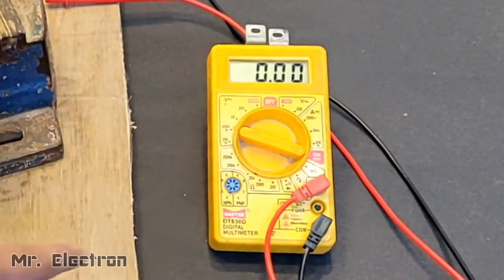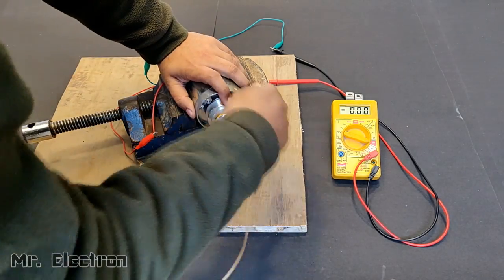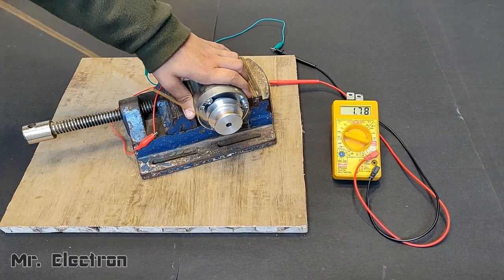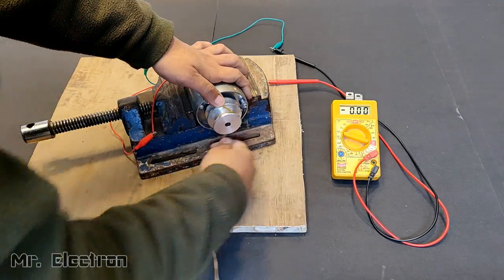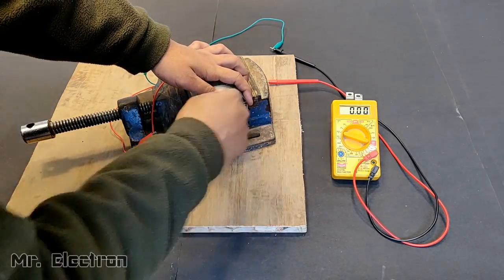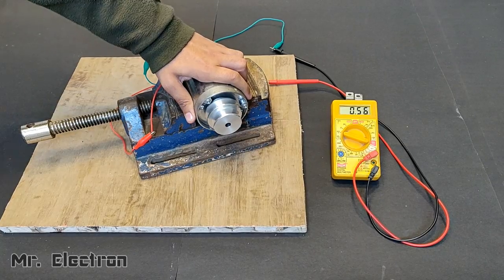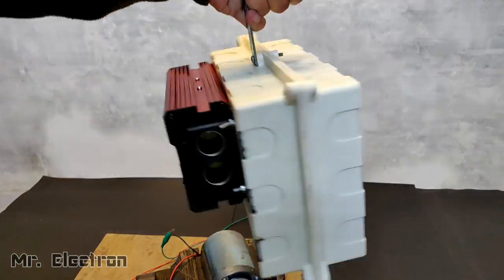Let's measure the current now. Pointing the meter towards 10 amperes current mode and winding the thread. You can see that the current rating was around 1.79 amperes. Second try, you can see it is 2.60 amps max I could try.